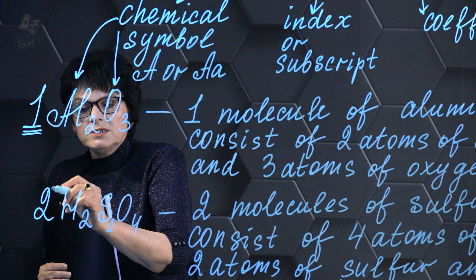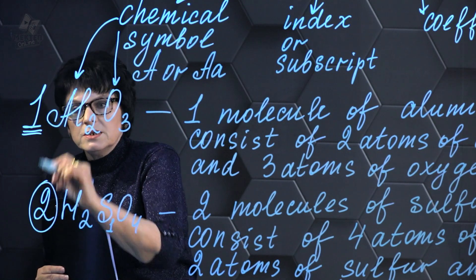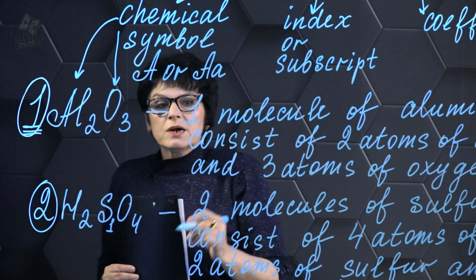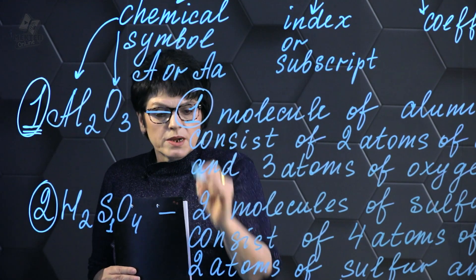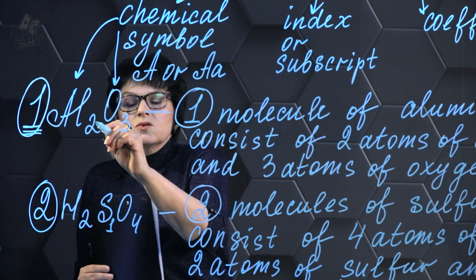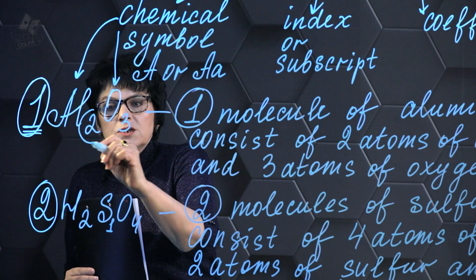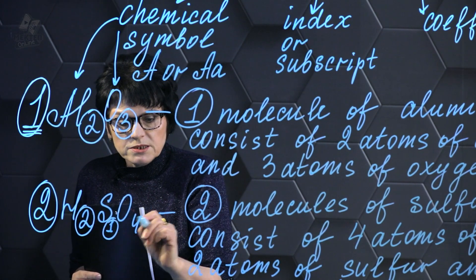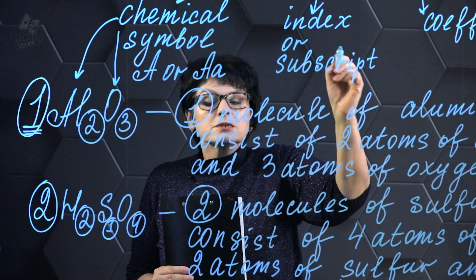Prior to the formula, there can be coefficients which show the number of molecules. And besides that, there are other numbers in the formula, like 2 and 3, or in this case, 2, 1, and 4. These are indices or subscripts.